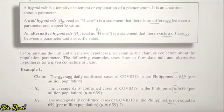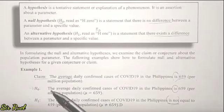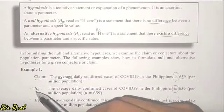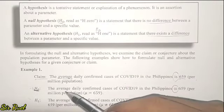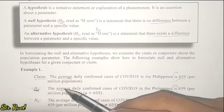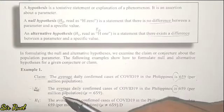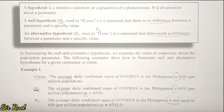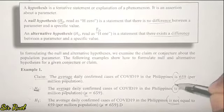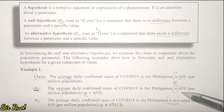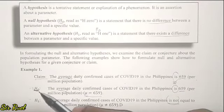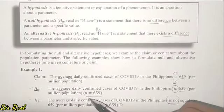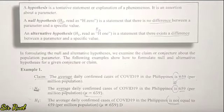Now let's write this hypothesis in symbols. For the null hypothesis, we write H0, and since the parameter is average — which is a population parameter — we use the population mean symbol μ. The word 'is' is equivalent to the equal sign, and the value is 659. So the null hypothesis in symbols is: H0: μ = 659.